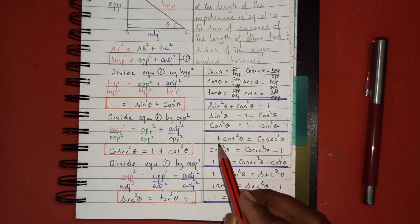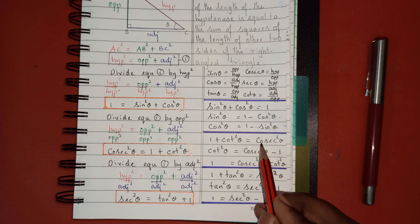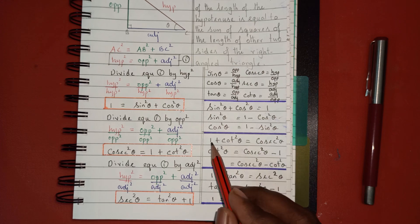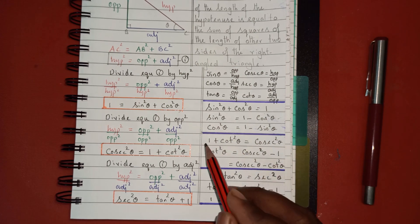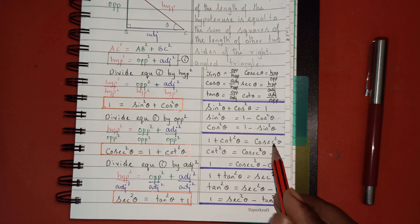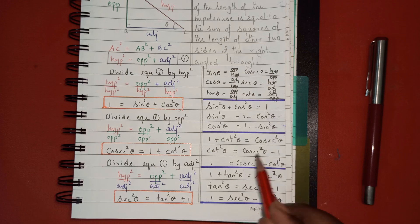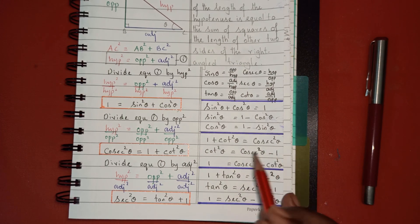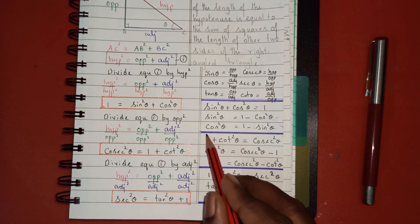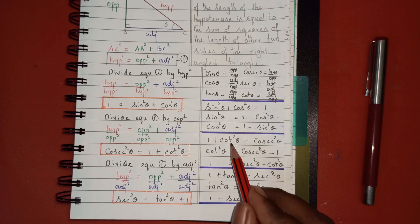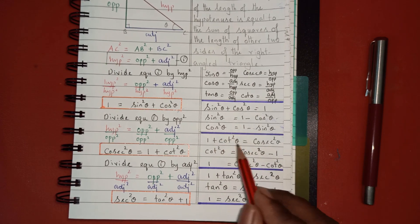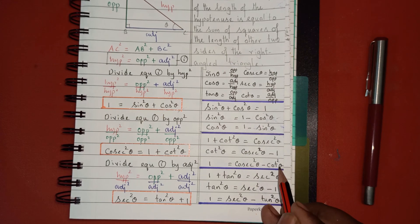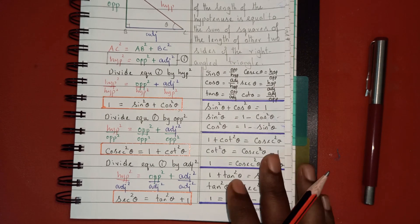From the second identity, 1 + cot²θ = csc²θ: if I want only cot²θ, I rearrange to get cot²θ = csc²θ − 1. If I want only 1, I rearrange to get 1 = csc²θ − cot²θ.